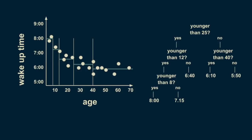We can also subdivide the 40-to-70 group on the 58-year line. Notice that we are getting to where we only have one or two data points per leaf of our tree. This is a dangerous condition and can lead to overfitting, which we'll talk more about in a minute. The resulting tree lets us make a numerical estimate depending on someone's age. If I need to estimate the wake-up time for a 36-year-old, I can start at the top of the tree: are they younger than 25? No — go to the right. Are they younger than 40? Yes — go to the left. The estimate then becomes 6:10 a.m. The structure of the decision tree lets you sort people of any age into their respective bin and make an estimate about their wake-up time.